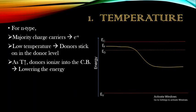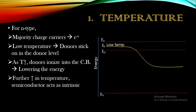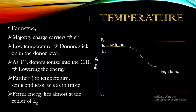As the temperature goes on increasing, the donors present in the donor level will ionize into the conduction band. Because of this, the Fermi energy decreases — it moves towards the valence band. The total energy of the donor level decreases as electrons ionize into the conduction band, and this nature is evident in the energy level diagram.